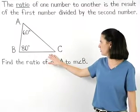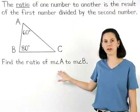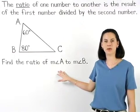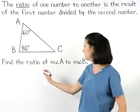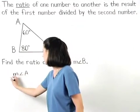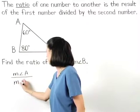in the diagram shown, if we're asked to find the ratio of the measure of angle A to the measure of angle B, we take the measure of angle A divided by the measure of angle B.